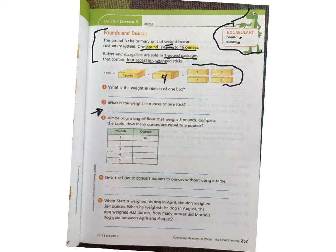Let's start with number one. What is the weight in ounces? We're doing ounces of one box. Well, here's one box. We know that it weighs one pound, but they want to know, convert that to ounces. Well, do you remember what they said up here on top? One pound is the same as 16 ounces. So when they ask, what is the weight in ounces of one box, I can say 16 ounces because that's the same as one pound.